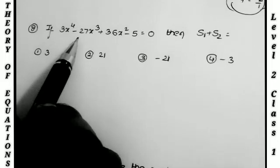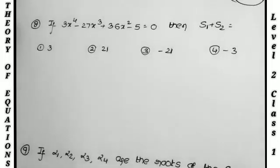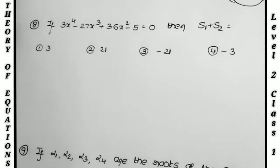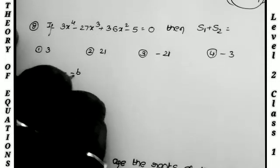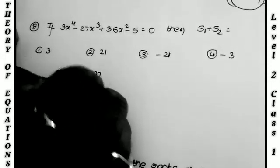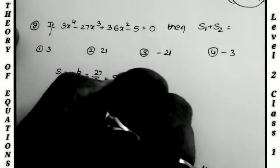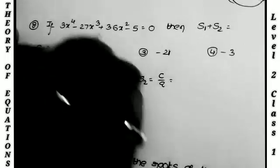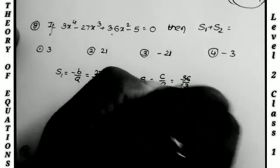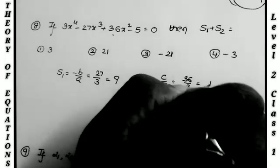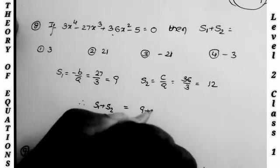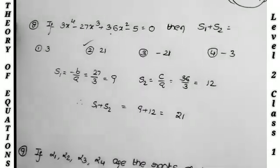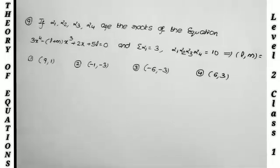If 3x⁴ minus 27x³ plus 36x² minus 5 equals 0, what is the value of S1 plus S2? S1 equals minus P by A equals 27 by 3 equals 9. S2 equals C by A equals 36 by 3 equals 12. Therefore S1 plus S2 equals 9 plus 12 equals 21. This is a very easy direct-type model question.